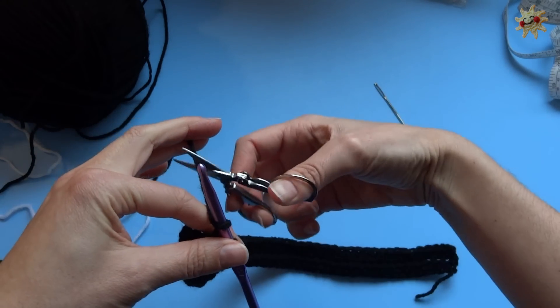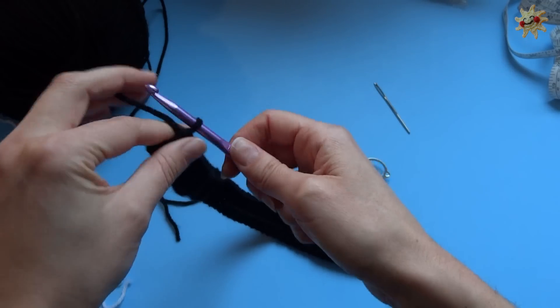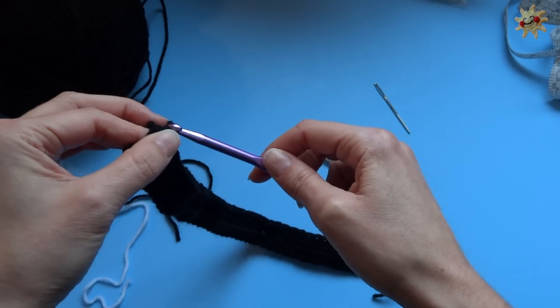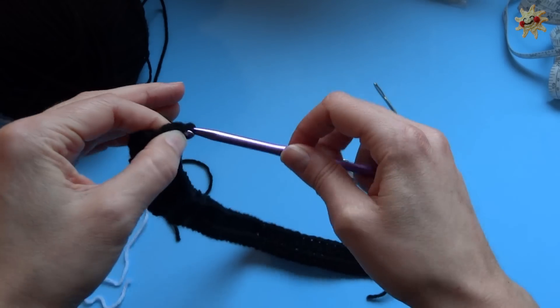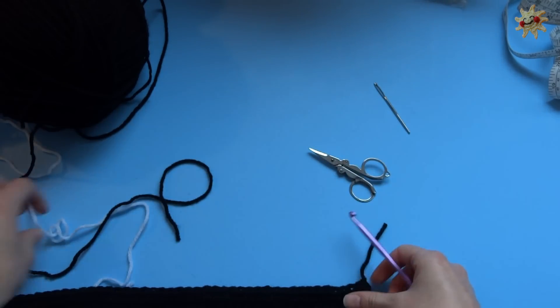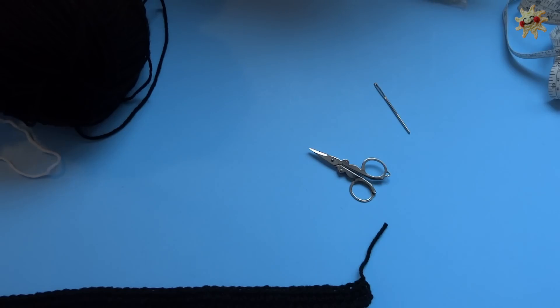So we're going to snip our yarn and we're going to pull it back through just to sort of, oops, come here, just to knot it off. And then we're going to switch it up.